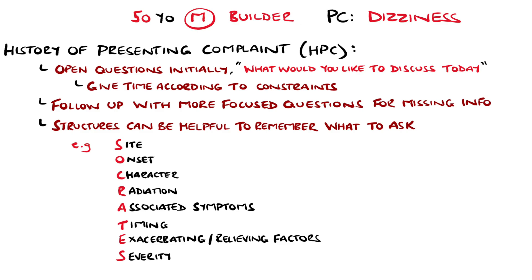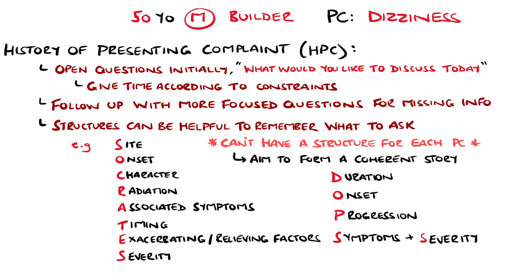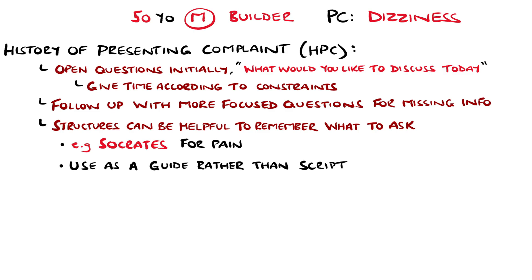The challenge is knowing which information you still need — this is where it's useful to have a structure to follow. For example, SOCRATES is a famous one for pain, as you're less likely to forget to ask about certain features by using a structure. Of course, you can't have one for each possible presenting complaint, but a general principle is to try to form a coherent story as to why the patient has presented. DOPS is a mnemonic to remember duration, onset, progression, severity, and symptoms, which can be a structure to help build a narrative. Think of it more as a guide to prompt your questions rather than a script to follow.